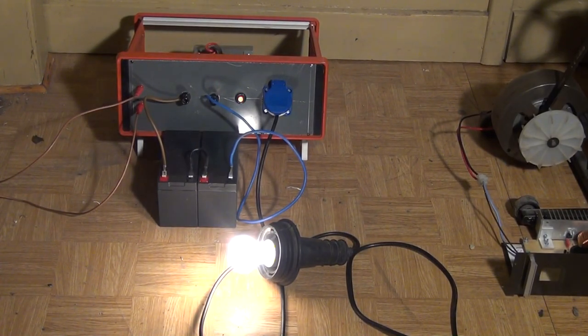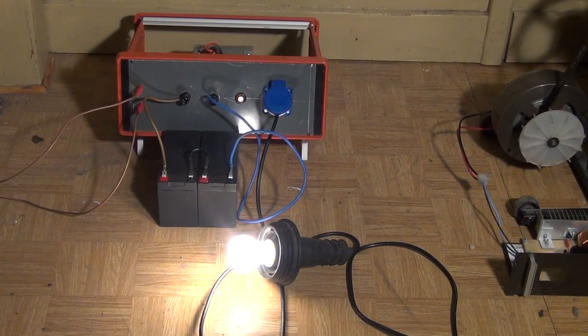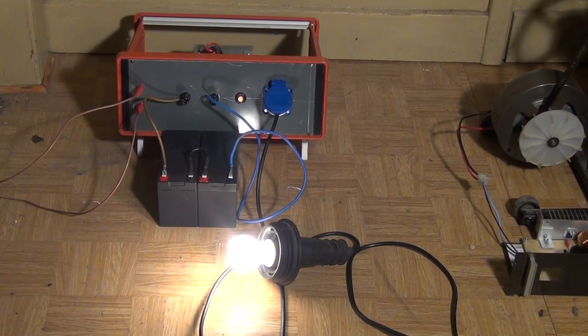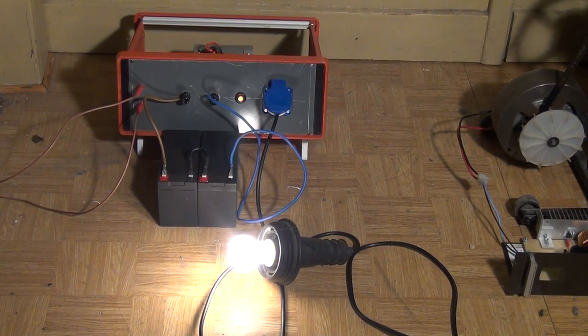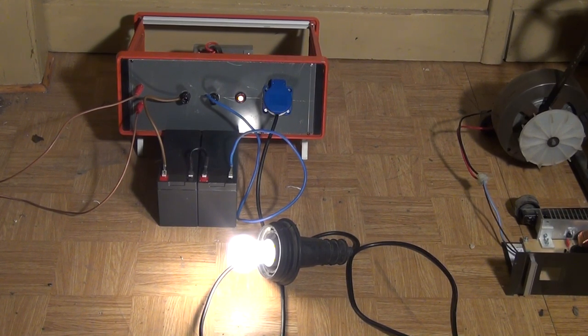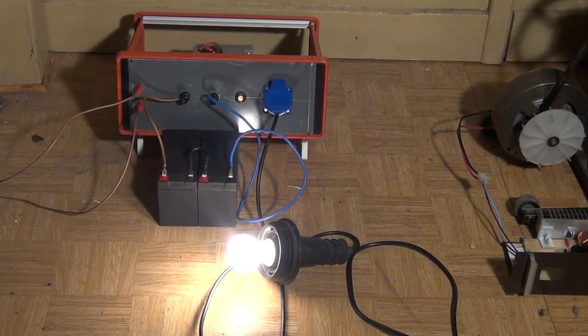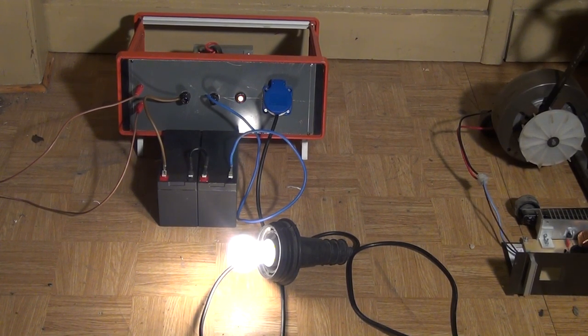Once the batteries are fully charged they can then be used to supply the power inverter whenever it is necessary. For example when your local power grid has collapsed. This 60W 230V light bulb is powered by the two 12V batteries via the power inverter.